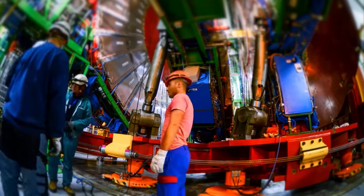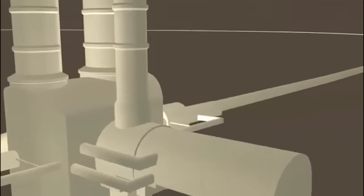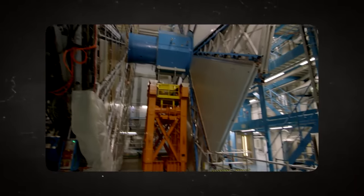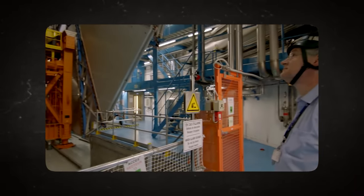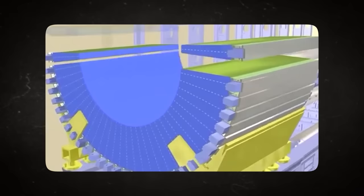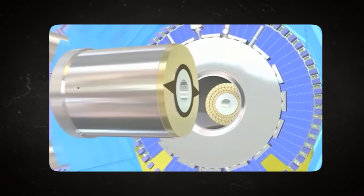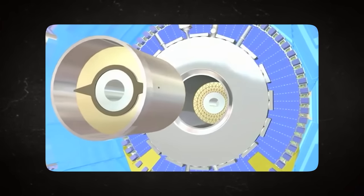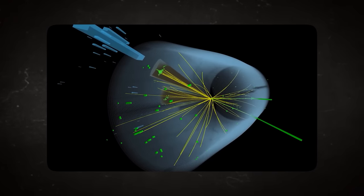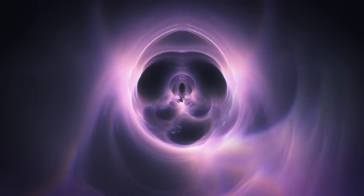The LHC's other general-purpose detector is the ATLAS, A Toroidal LHC Apparatus. It functions similarly to the CMS but is different in how it does its detection and how its subsystems and magnets are designed. Also, it is less compact when compared to the CMS, as it occupies a greater volume than any other particle detector ever built. Also, one of the many experiments that have been carried out includes trying to figure out why the universe contains more matter than antimatter.